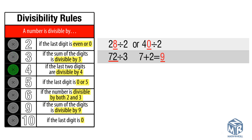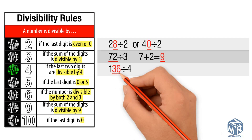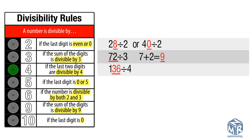A number is divisible by 4 if the last two digits are divisible by 4. 136 divided by 4: 36 is divisible by 4, so 136 is divisible by 4.